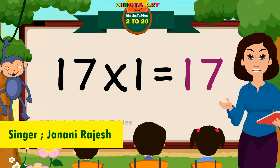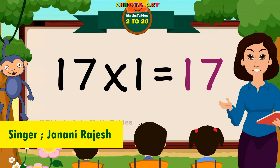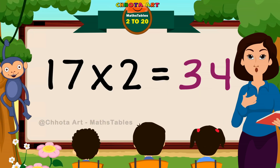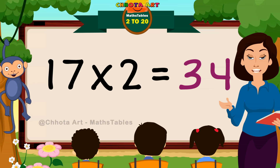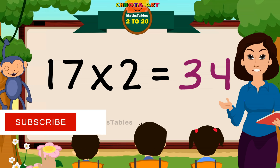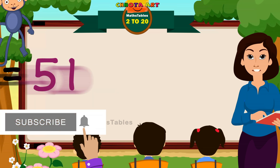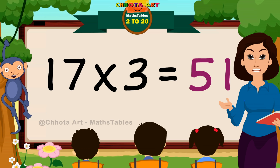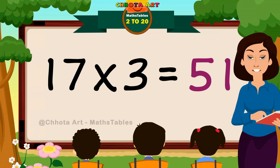Seventeen ones are seventeen. Seventeen twos are thirty-four. Seventeen threes are fifty-one.